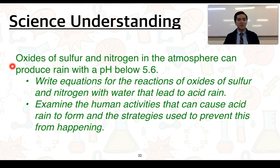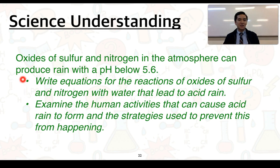Our second science understanding now deals with acid rain in particular. We'll look at this first part: oxides of sulfur and nitrogen in the atmosphere can produce rain with a pH below 5.6. I'll be going through writing equations for the reactions of oxides of sulfur and nitrogen with water that contribute to acid rain.